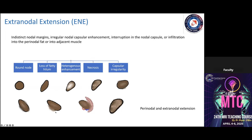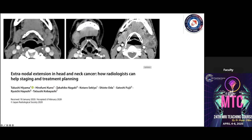Imaging findings of extranodal extension include capsular breach infiltrating fat, vessels, and muscles. In example cases, the node is seen infiltrating the sternocleidomastoid gland, abutting carotid vessels with loss of fat plane, versus preserved fat indicating a clear plane. These findings are critical not only for staging but also for radiation oncologists to plan treatment accurately.